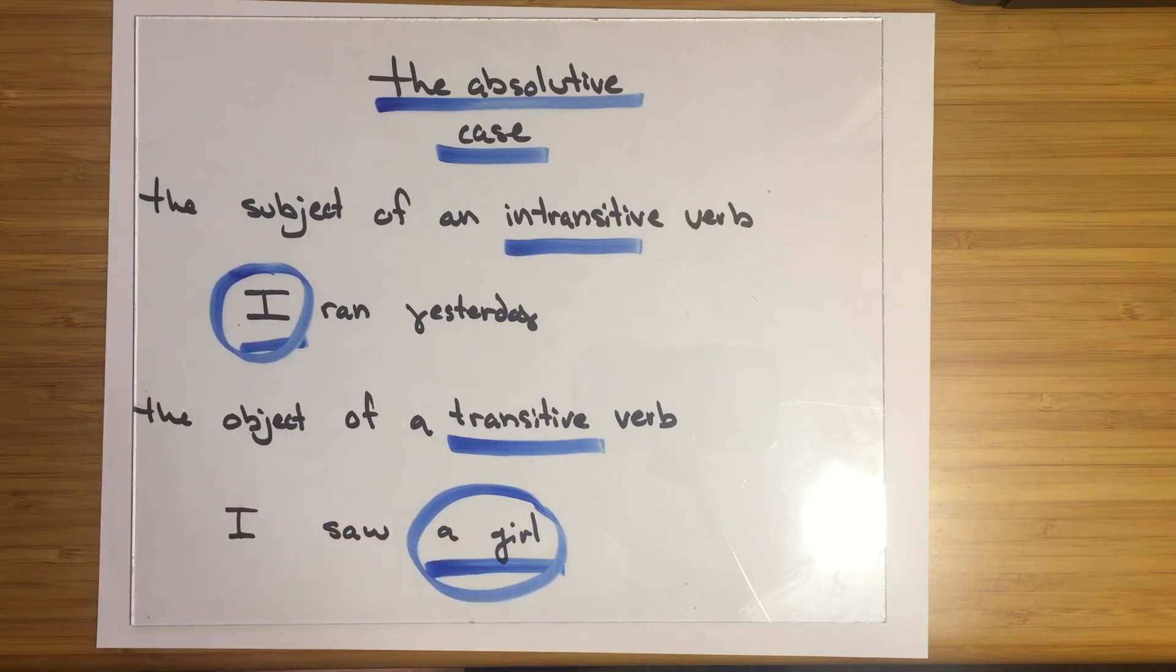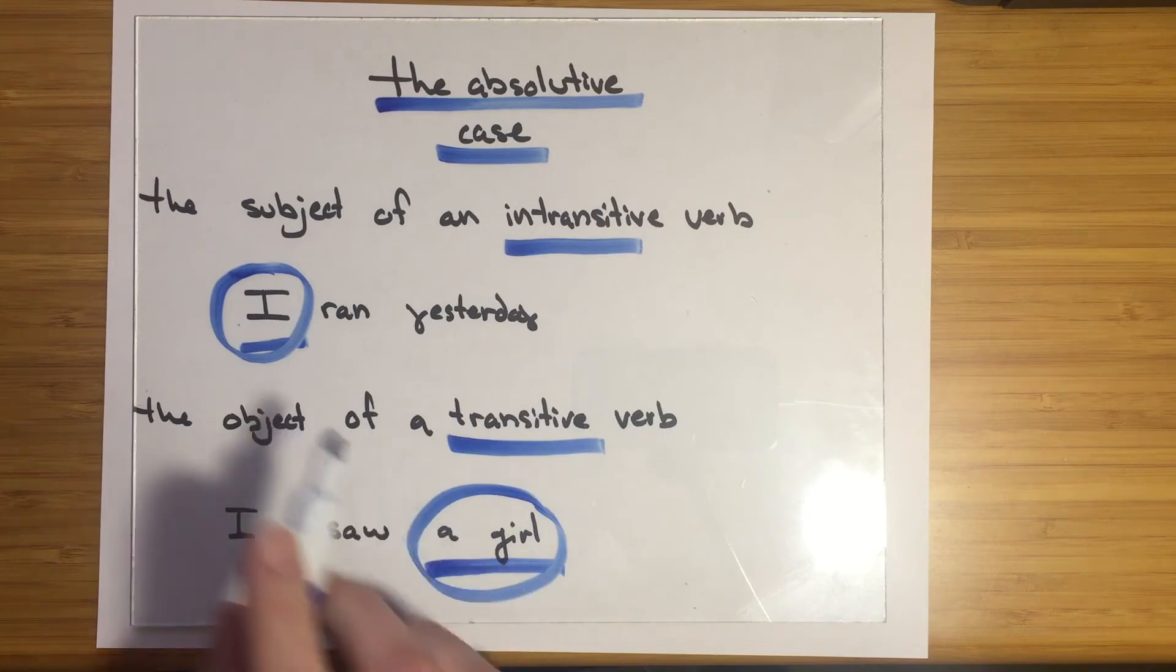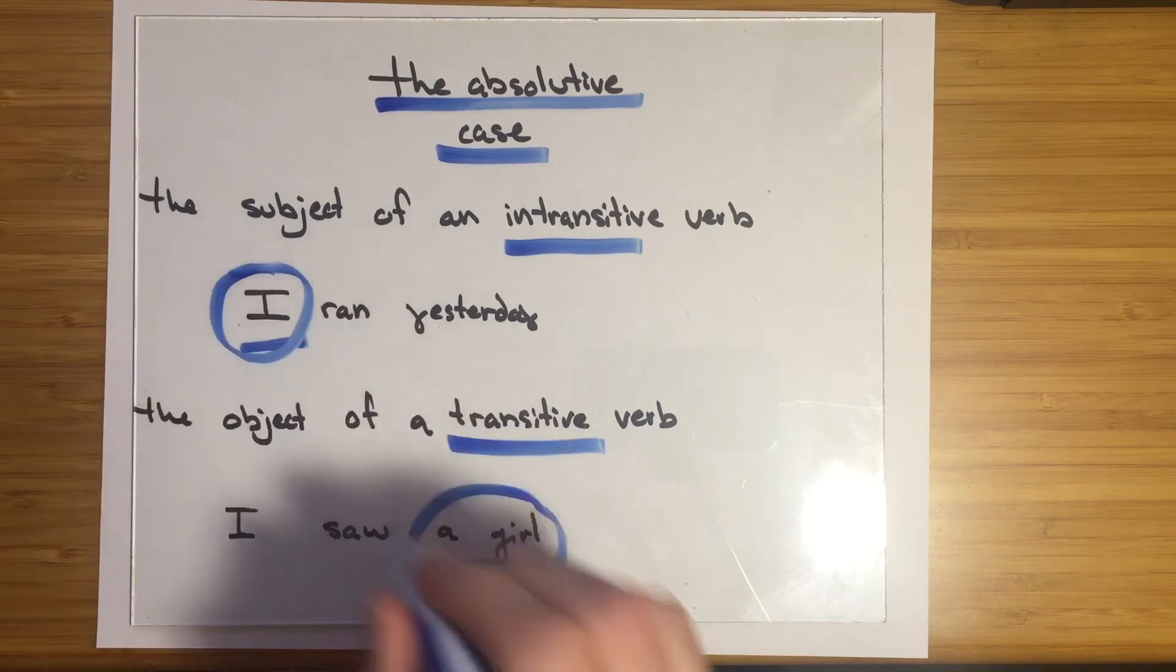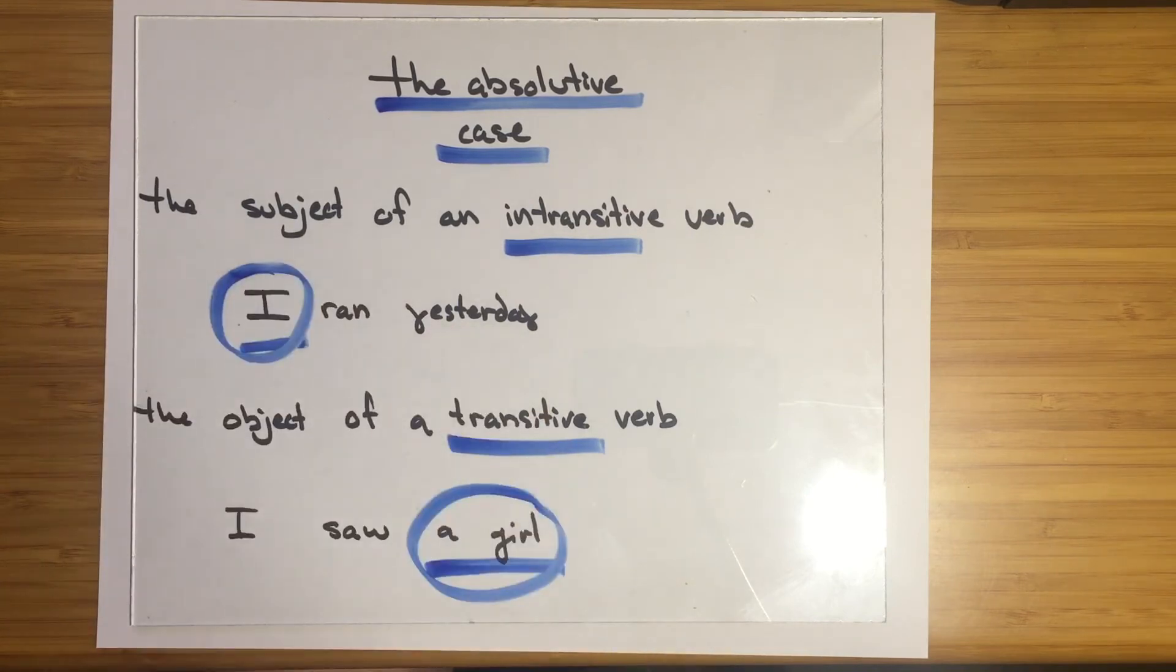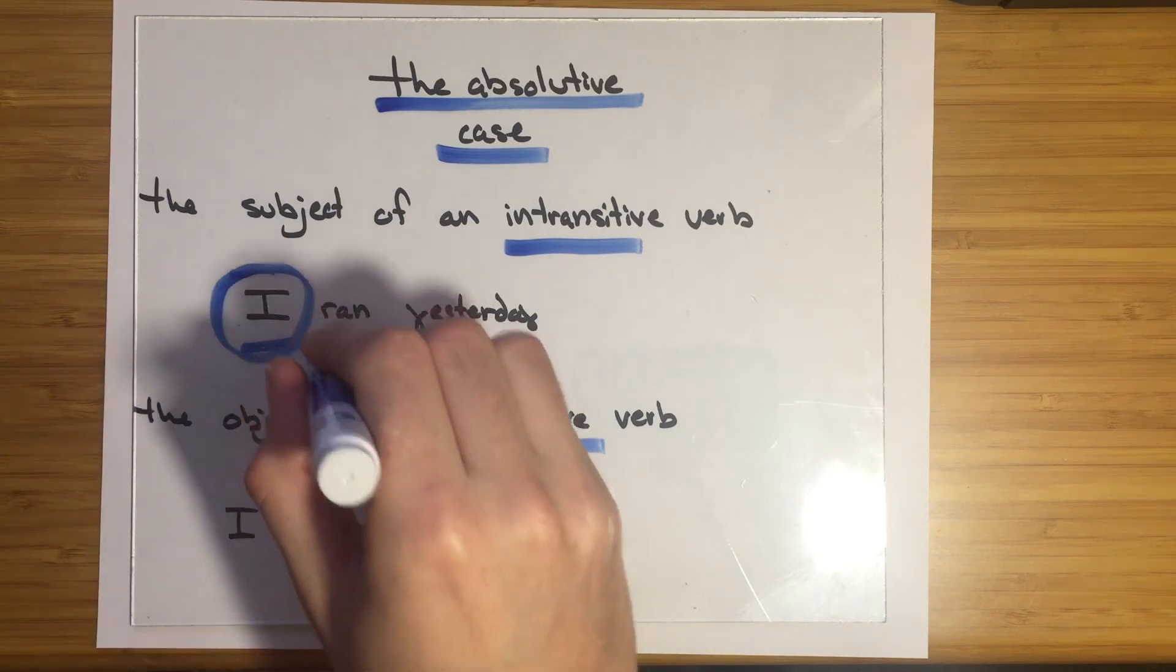But there are languages in which it would say I here, if that were the object. He saw I and I ran yesterday. Because these two are both in the grammatical position of an absolutive case.